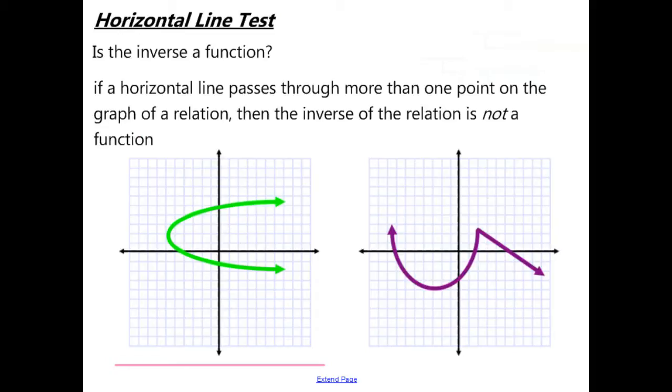Next, let's talk about the horizontal line test. This is similar to the vertical line test, but the horizontal line test tests whether the inverse is a function. So if a horizontal line passes through more than one point on the graph of a relation, then the inverse of the relation is not a function.